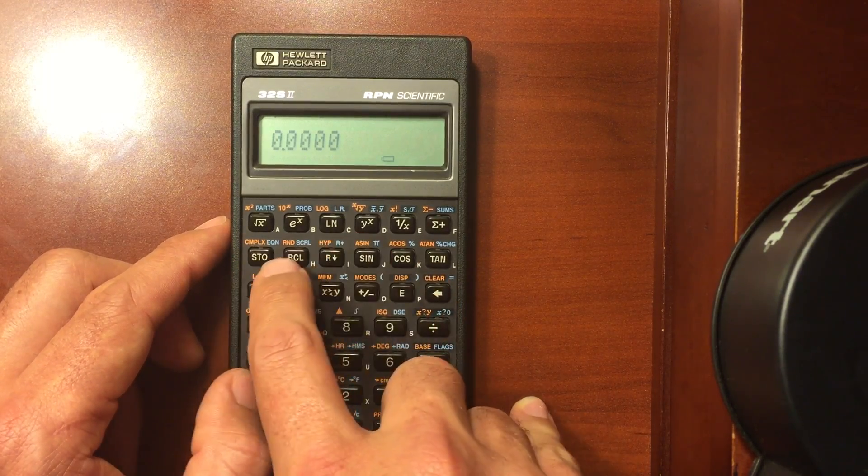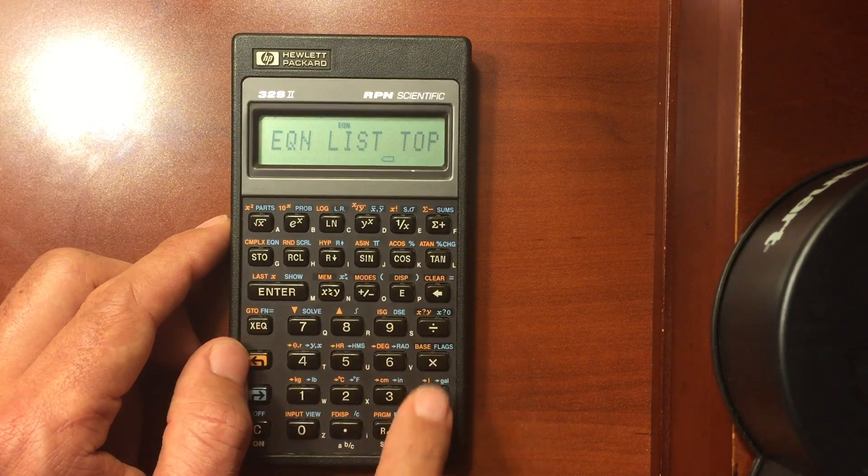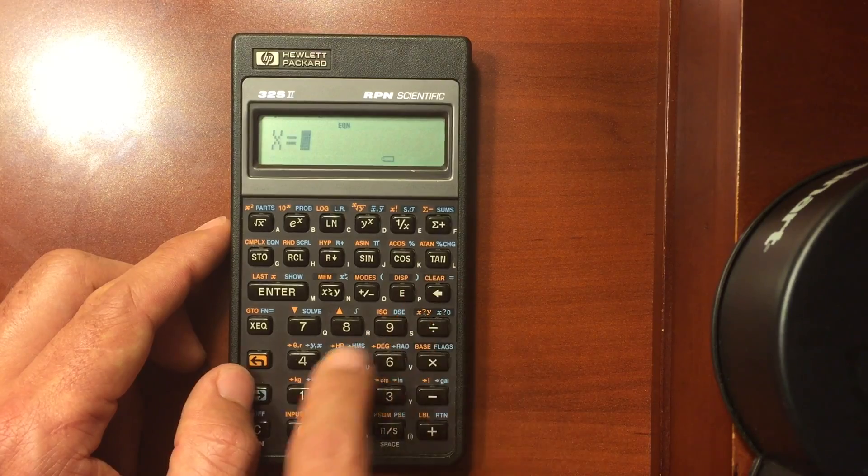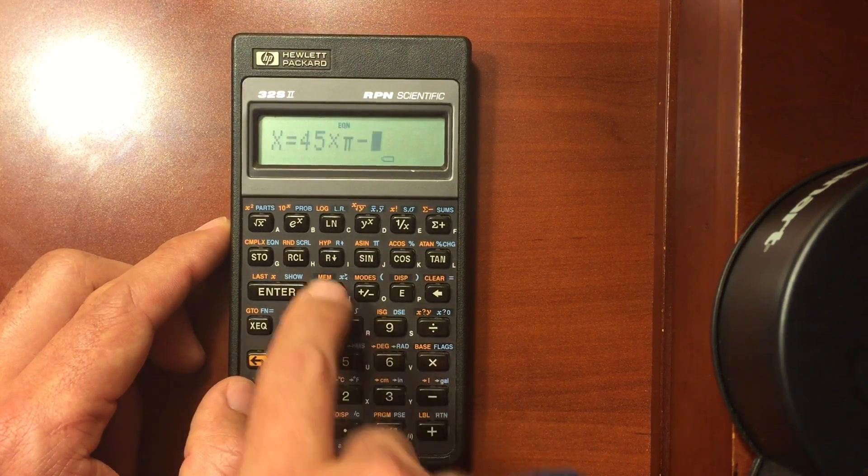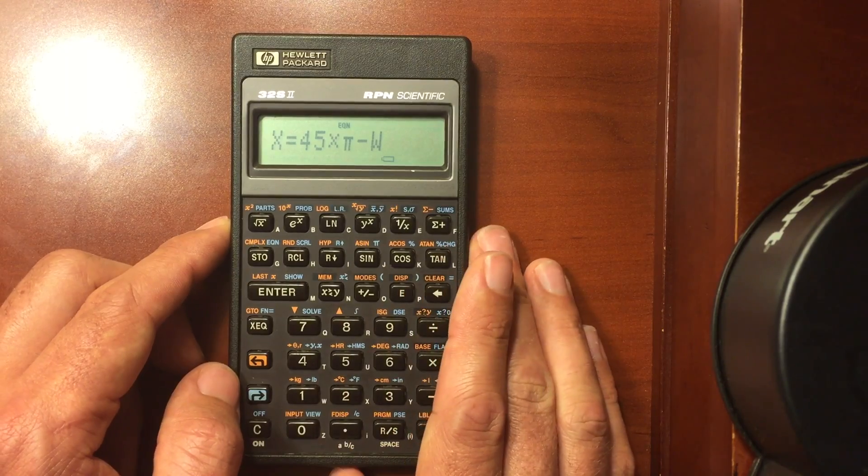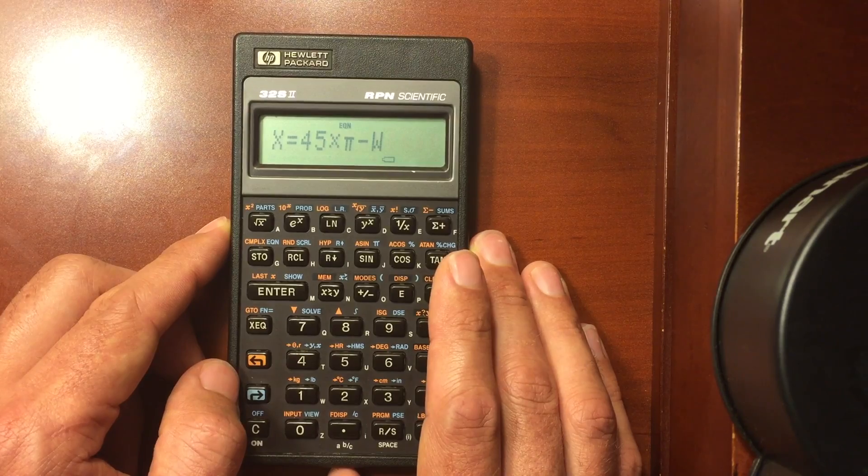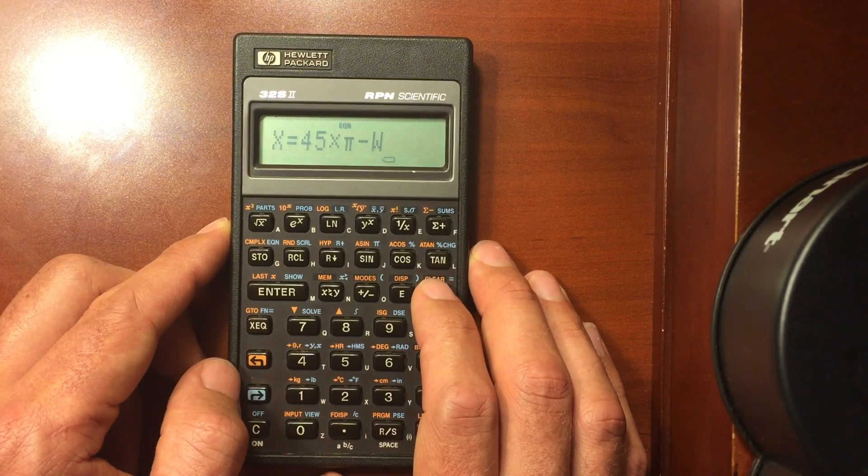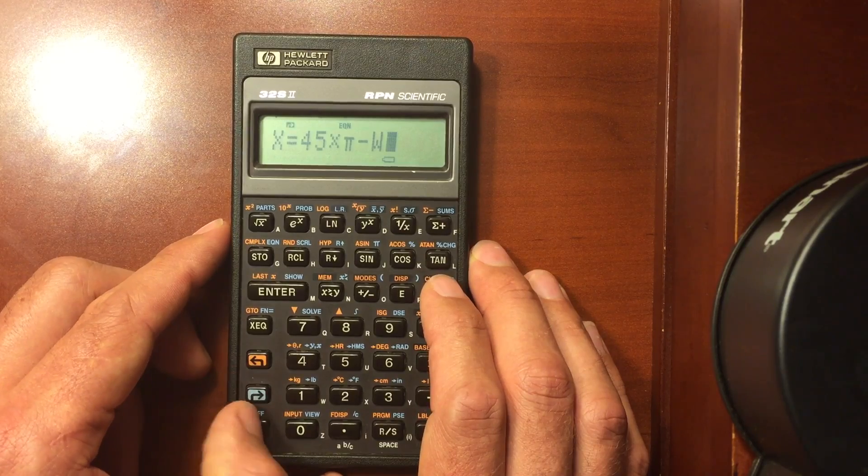You can do complex numbers. You have an equation editor which is really nice. You can enter in a bunch of equations. I don't have any entered here, but I could do recall x is equal to 45 times pi minus w, something like that. And I could solve for a variable in that equation. I could solve for either x or w, or I could run that and solve for x given a particular w. And it'll also find roots, so you can figure out, you know, if you're finding the roots of an equation, you can do quadratic equations, etc.